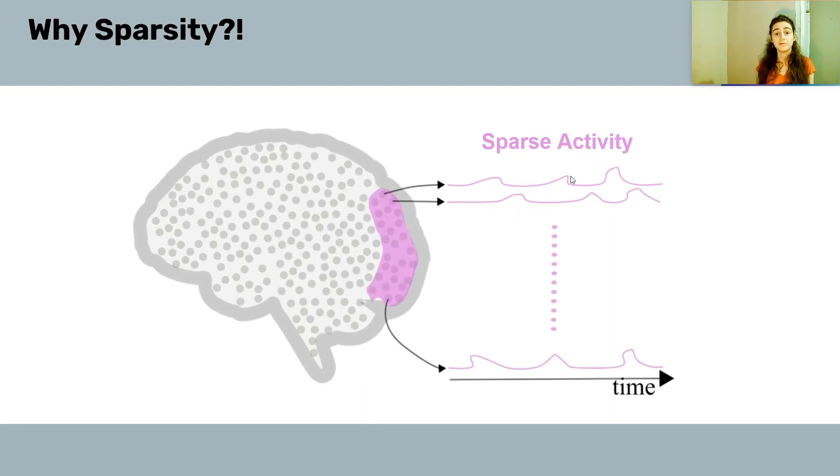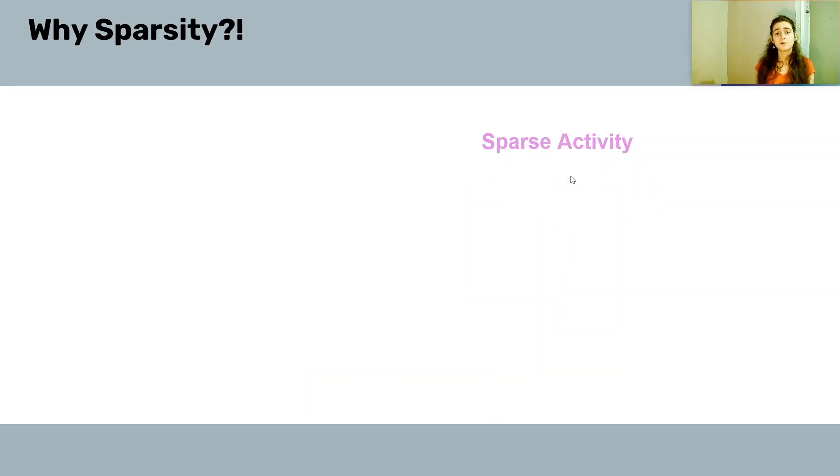When we compare different neurons, we may see different sparsity patterns. Different neurons may fire at different time points, thus creating an overall sparse activity pattern over the brain. We will see these themes—sparse connectivity and sparse activity—throughout the tutorial.